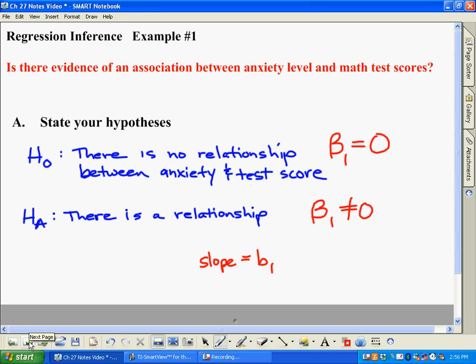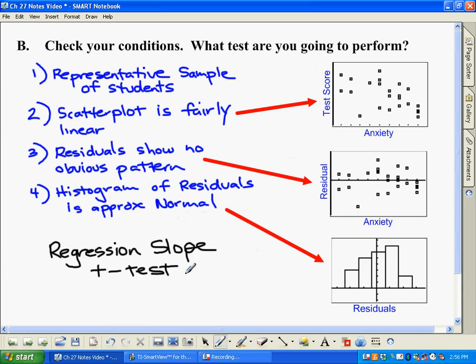So with that in mind here, we have our hypotheses here and they have to do with slope. Now, we're going to go ahead and check conditions like we always do. So how that will work is there's actually four conditions whatsoever. The first one is, is this the representative sample of students? Well, of course, I mean there's 24 students that were chosen. We have no reason to believe they're any different from anyone else, so that works.